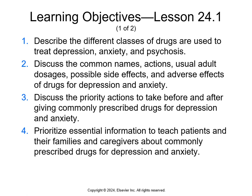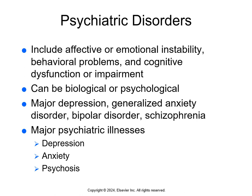Chapter 25 is drug therapy for psychiatric problems. Psychiatric disorders are a broad group of illnesses that includes things like emotional instability, behavioral problems, and cognitive dysfunction. They can be biologic like chemical imbalances or genetic, or psychological like emotional conflict. They can affect a person's ability to function in society or relationships. Some specific illnesses include major depression, generalized anxiety disorder, bipolar disorder, and schizophrenia.